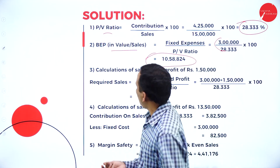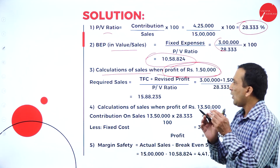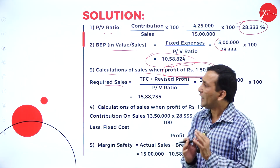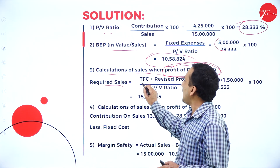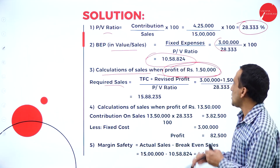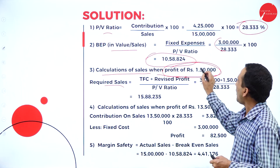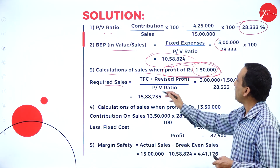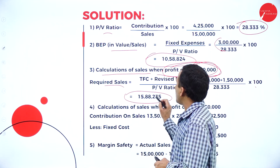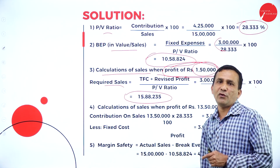Next, the third part: calculation of required sales when profit is given. Applying the standard formula — required sales equals total fixed cost plus the desired or reserved profit, divided by PV ratio. Fixed cost from the statement is 3 lakhs, and the required profit is 1 lakh 50,000. Dividing by PV ratio 28.33 into 100, the required sales is 15,88,235. So when you achieve this sales, you will receive a profit of 1 lakh 50,000.